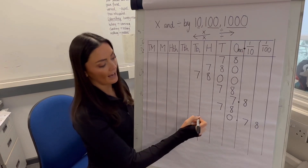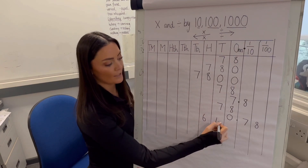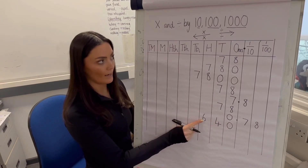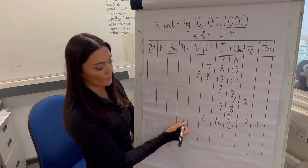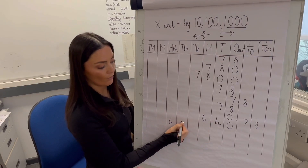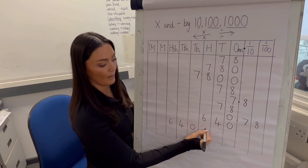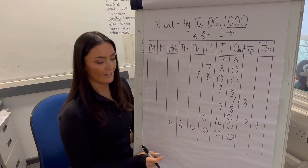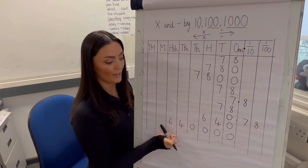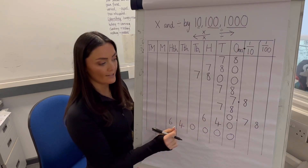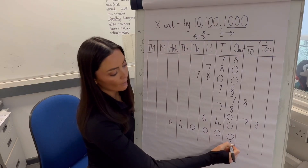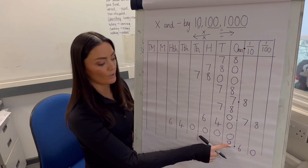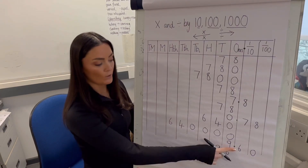If I have 640 and want to make it 1000 times bigger, I move all digits three places to the left: the 6 moves 1-2-3, the 4 moves 1-2-3, the 0 moves 1-2-3, and I add placeholders. So 640 × 1000 = 640,000. We don't say we've just added zeros, because 640 + 0 is still 640. And if I have 9.6 and multiply by 10, adding a zero gives 9.60, still 9.6 — that's why we move digits: 9.6 × 10 = 96.